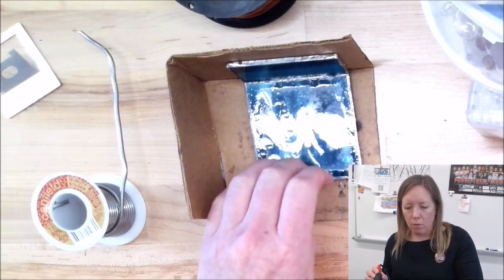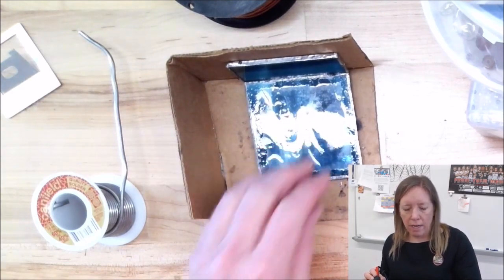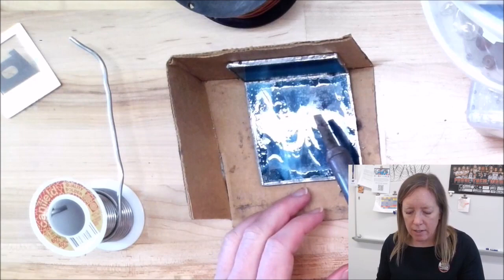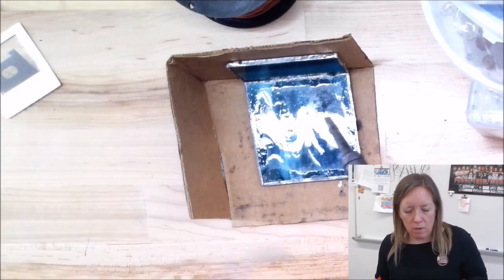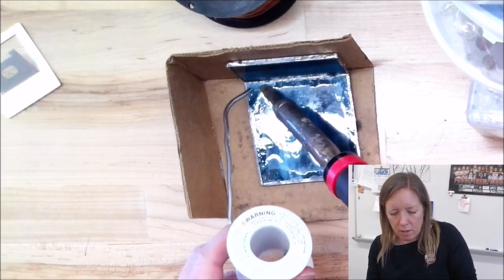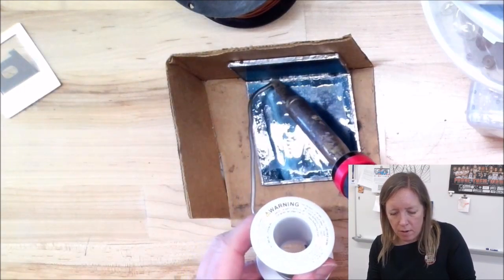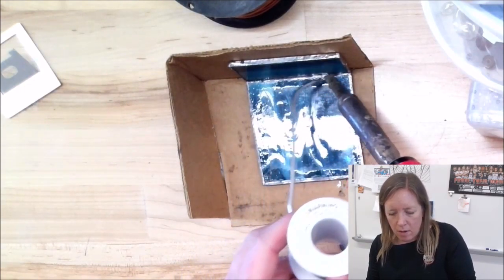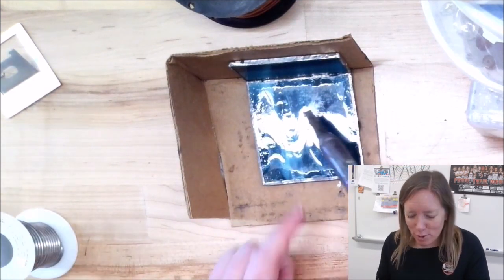And I'm just going to touch this iron there to melt some of that solder, so now it'll stay. So now I don't have to worry about it falling when I actually do the solder, okay? So do those two little tack spots first, and then you can take your actual solder. It's a little tricky to navigate with the cardboard, but you should be okay.